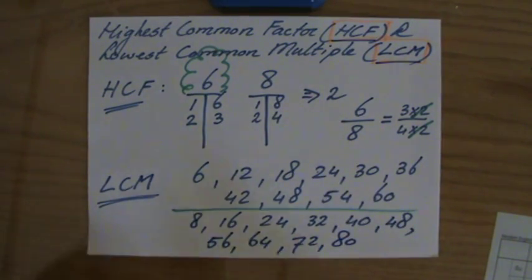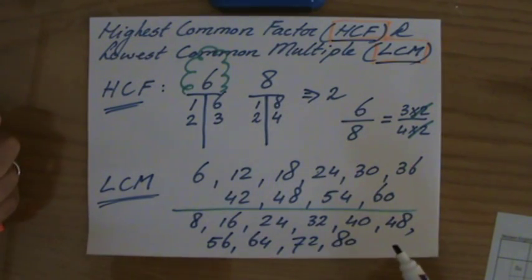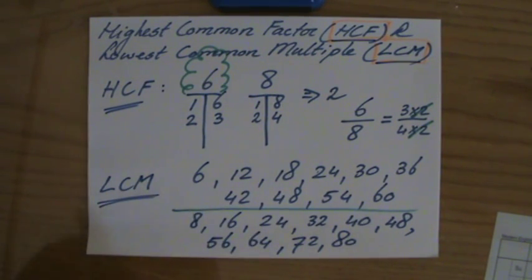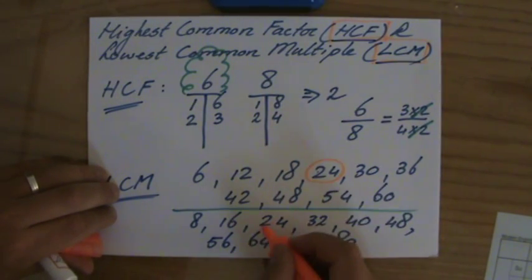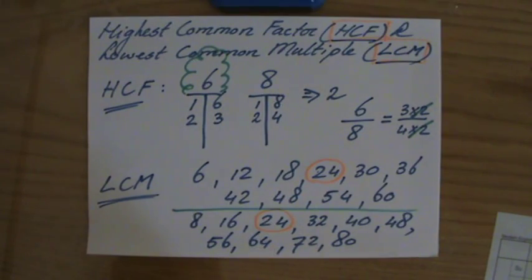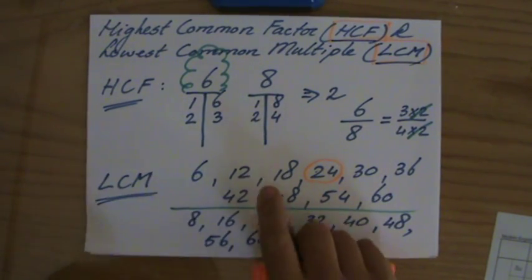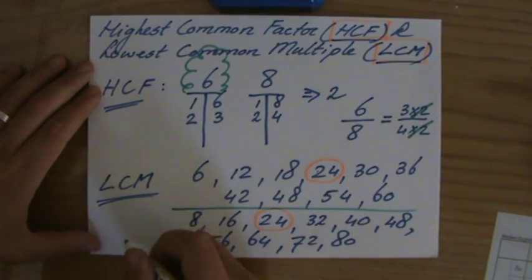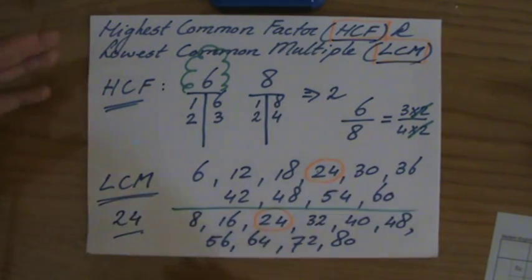Now the first ten multiples of 8: 8, 16, 24, 32, 40, 48, 56, 64, 72, and 80. What is the LCM — the lowest common multiple? They both have 48 in common, but that's not the lowest. They also have 24 in common — and yes, that is the lowest. So the lowest common multiple of 6 and 8 is 24.